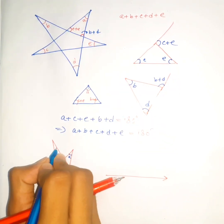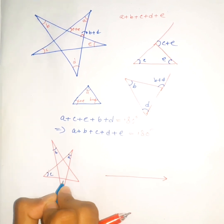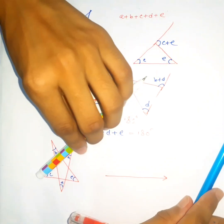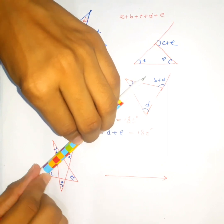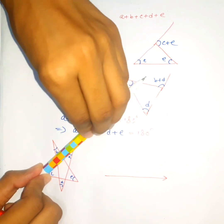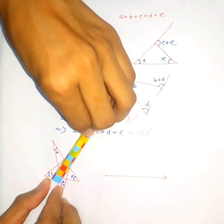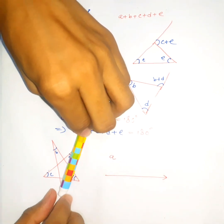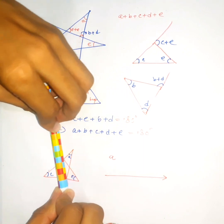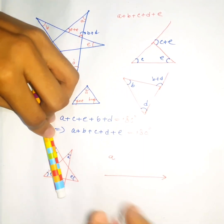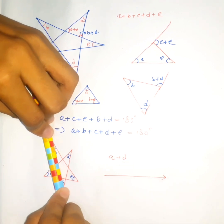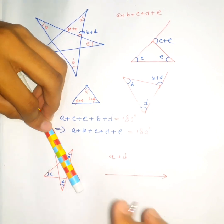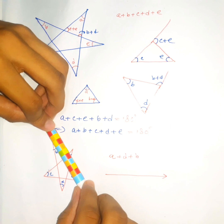The star has angles a, b, c, d, e. We are going to put this pen here and rotate it by angle a, then rotate it by angle d — so a plus d — and then rotate it by angle b. So now we have a plus d plus b.